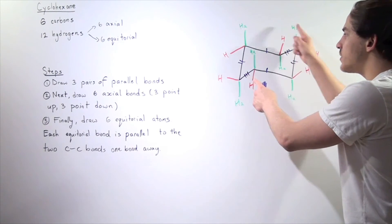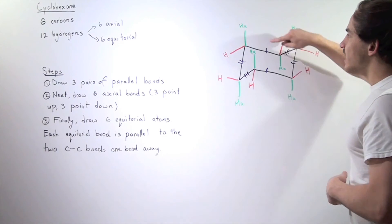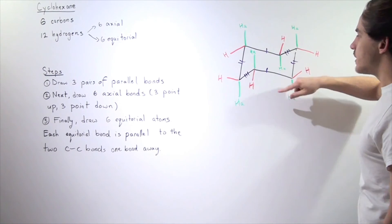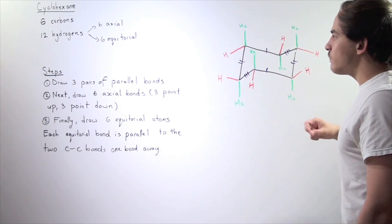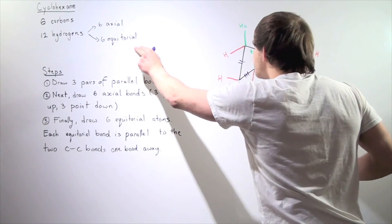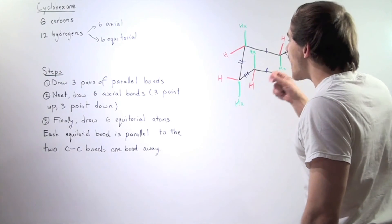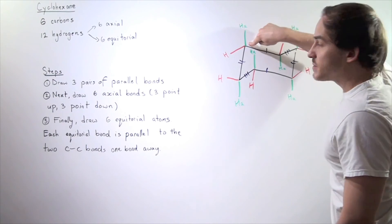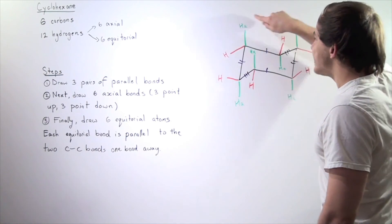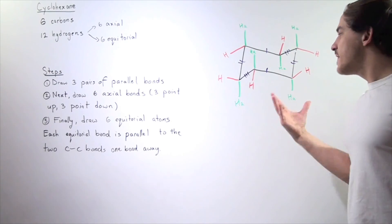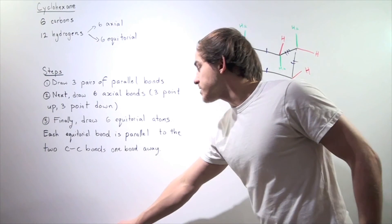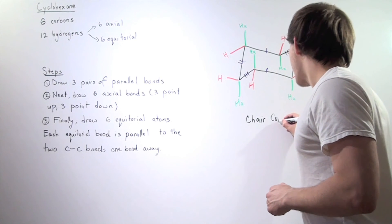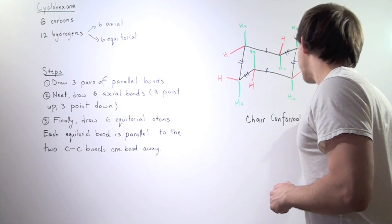So your first step is to draw the carbon backbone. Next step, label all the axial positions by alternating, starting with carbon one and alternating up, down, up, down, up, down. And finally, we finish off with our six equatorial positions — each equatorial bond is parallel to the bond one carbon over, either this one or this one for a specific carbon — and we go around our ring until we get back to our first position. And this is our chair conformation for cyclohexane, the most stable conformation out of all the conformations.